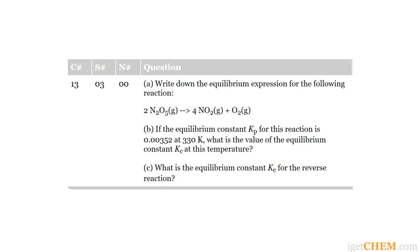Here is the problem. Part A: write down the equilibrium expression for the following reaction: 2N₂O₅ (gas) → 4NO₂ (gas) + O₂ (gas). Part B: if the equilibrium constant Kp for this reaction is 0.00352 at 330 K, what is the value of the equilibrium constant Kc at this temperature? Part C: what is the equilibrium constant Kc for the reverse reaction?